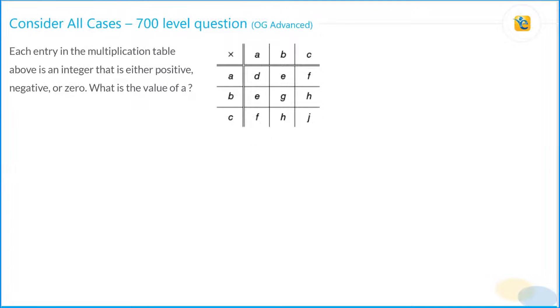All right, let's solve this question. Each entry in the multiplication table, this is the multiplication table, is an integer, which means each entry is an integer that is either positive, negative, or zero. So basically each of these numbers is positive, negative, or zero. What is the value of A? We need to figure out the value of A. Relatively straightforward question statement.